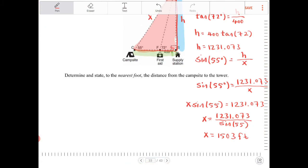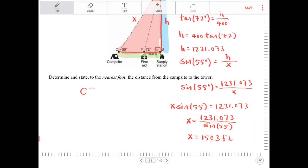So to answer the question, determine and state to the nearest foot the distance from the campsite to the tower. So CT, the length of CT, will equal to 1503 feet.